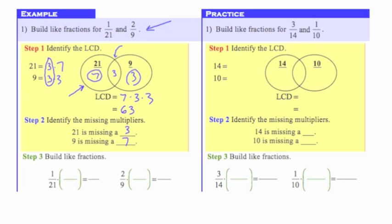Now I'm going to take these two multipliers in step 3, which is to build like fractions. For 21, my missing multiplier was 3, so I'm going to multiply the top and the bottom of this fraction by 3. That will give me 3 in the numerator, and we already know that 21 times 3 gives us 63, our common denominator. For our denominator of 9, the missing multiplier was 7, so that gives me 14 in the numerator and 63 in the denominator. Now I've built these into like fractions, and I could go ahead and add or subtract. The Venn diagram finds us the LCD and the missing multipliers we need to get that common denominator.